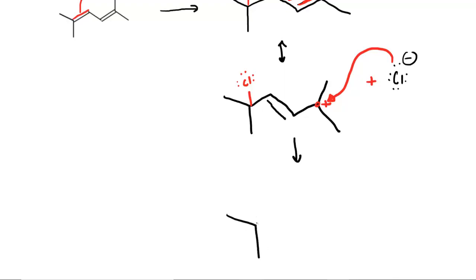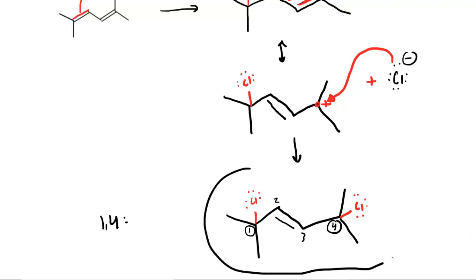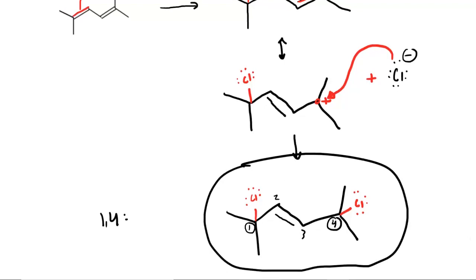By drawing the arrow showing the chloride attacking at that position, we see a different product: the second chlorine added at this far carbon, while the first chlorine remains at its original position. Studying this carefully, we have the 1,4 addition product. Carbon one is where the first chlorine bonded, then two, then three, and carbon four is where the second chlorine added. This is your 1,4 product.